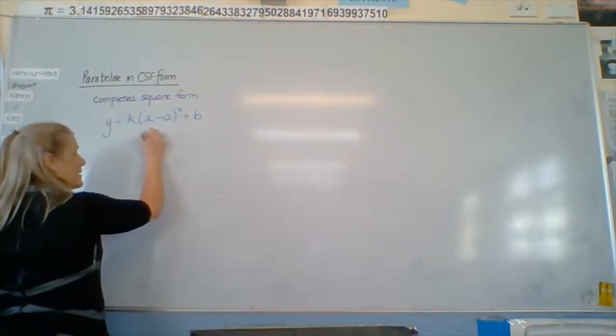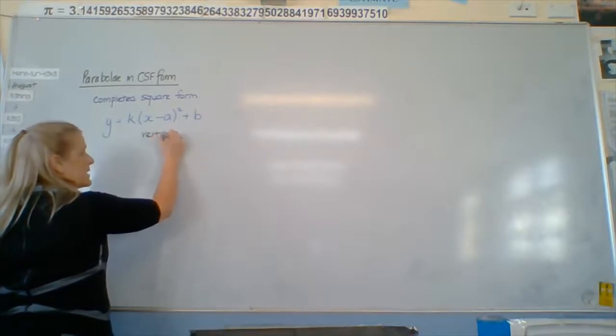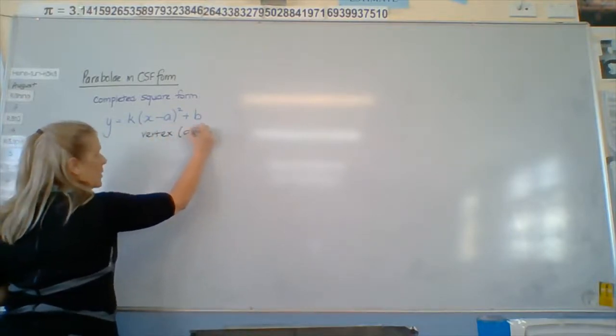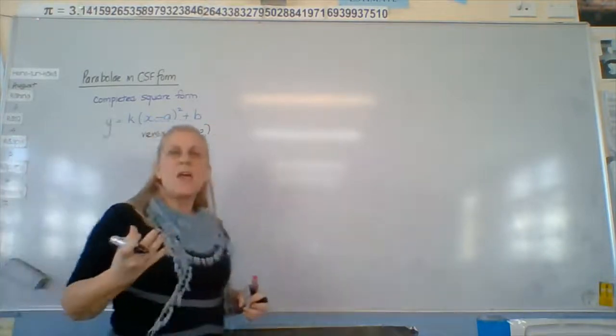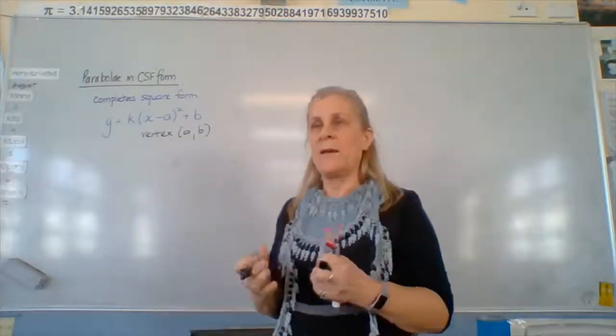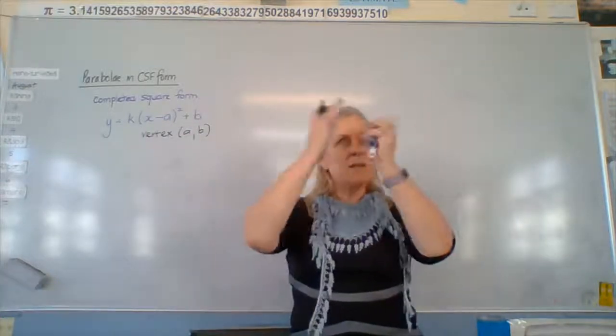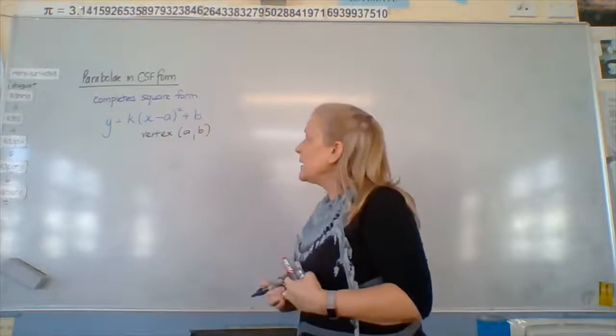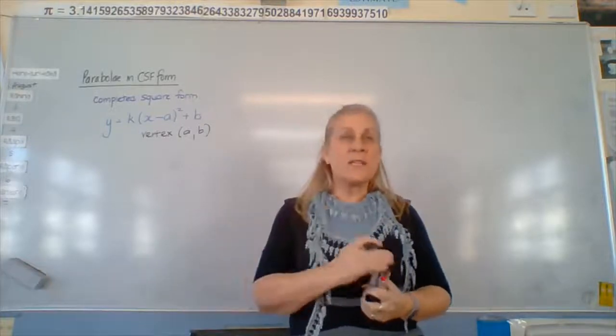Remember that a goes backwards. So instead of it being negative, it's a, b. And it also has that k, which is the multiplier. So it tells us how wide the parabola's going to be. Alright? So in the same vein as we did it the other day, we're going to do one without k.